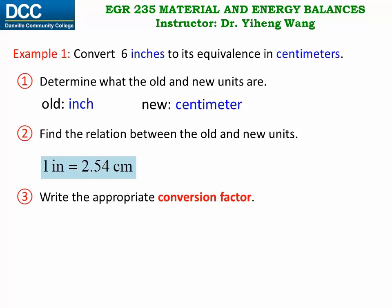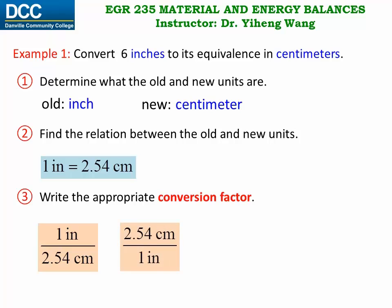Based on each equality, we can always write two conversion factors. In this case: one inch over 2.54 centimeters, or 2.54 centimeters over one inch. Because of the equality, we know that both of these two conversion factors equal to pure number one. This is very important because the next step is to multiply our original quantity by this conversion factor. If the conversion factor is not pure number one, then we will change our given quantity, which is not acceptable.